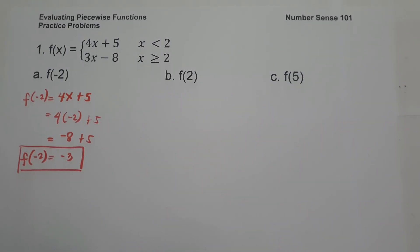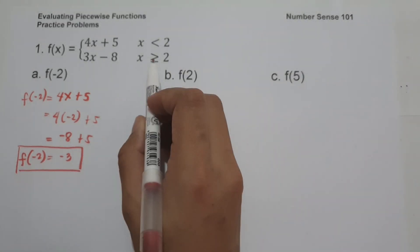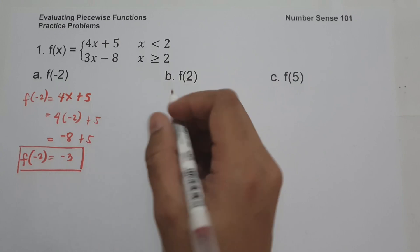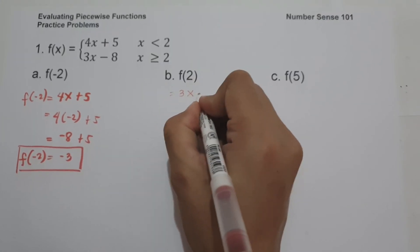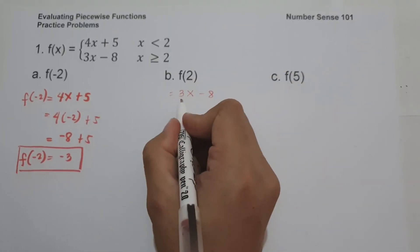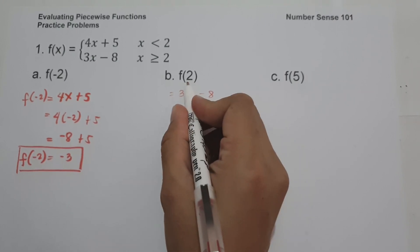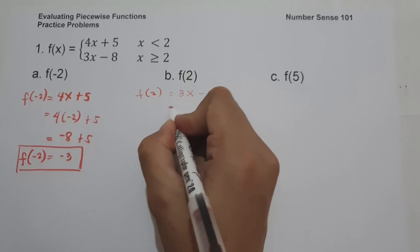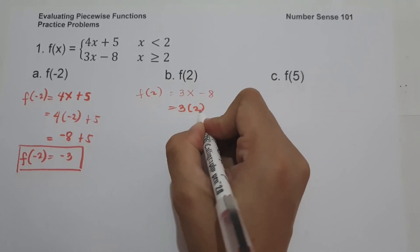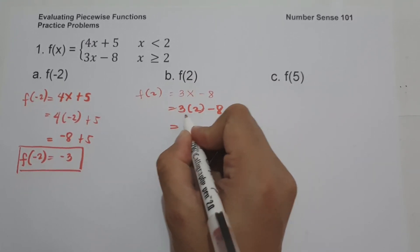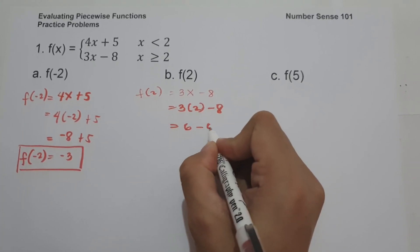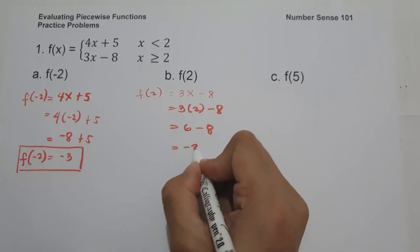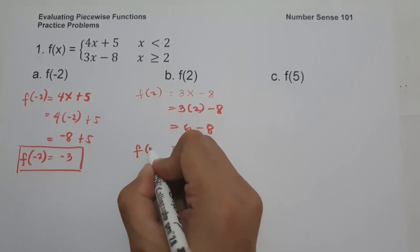On letter B, how can we find the value of f of 2? In our given, if x is greater than or equal to 2, we are going to use 3x minus 8. So we have 3 multiplied by 2 minus 8. 3 times 2 is 6, minus 8, and that is negative 2. So this will be the value of f of 2.